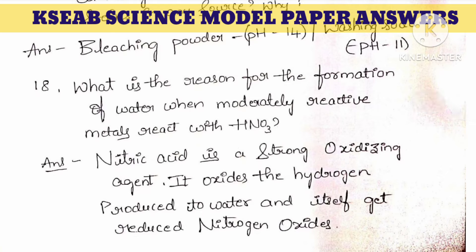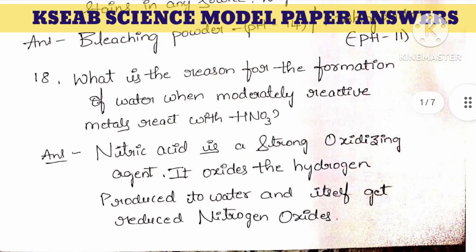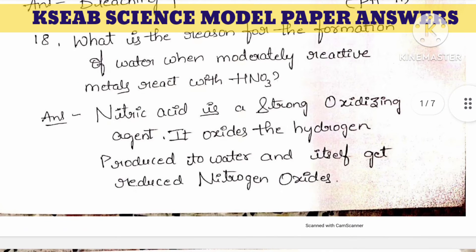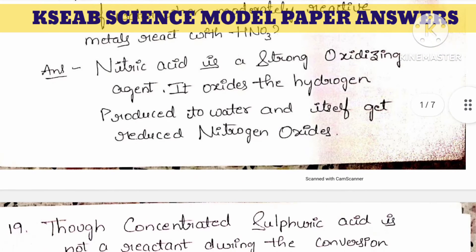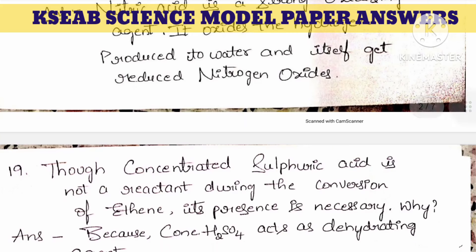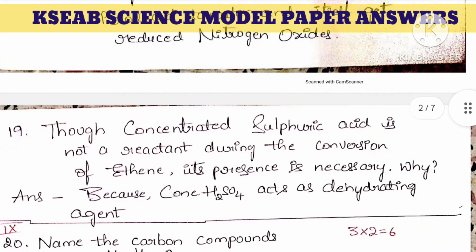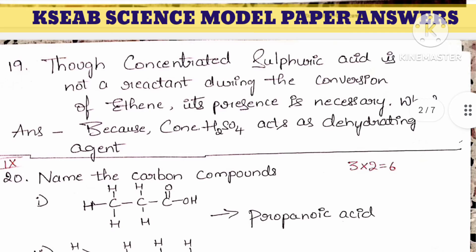18th question: what is the reason for the formation of water when moderately reactive metals react with nitric acid? The right answer is that nitric acid is a strong oxidizing agent. It oxidizes the hydrogen produced to water and itself gets reduced to nitrogen oxides. This question has already appeared 2 to 3 times but the way of asking is completely different from one paper to another.